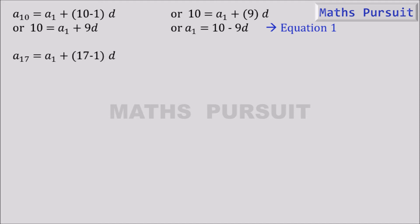Similarly, a17 is equal to a1 plus 17 minus 1 into d. Here a17 is 17 and a1 we do not know, that is we need to find out. And similarly here n is 17 and 17 minus 1 becomes 16, and d we do not know we are going to find out. Or 17 is equal to a1 plus 16d, or a1 is equal to 17 minus 16d. Let us name it as equation 2.